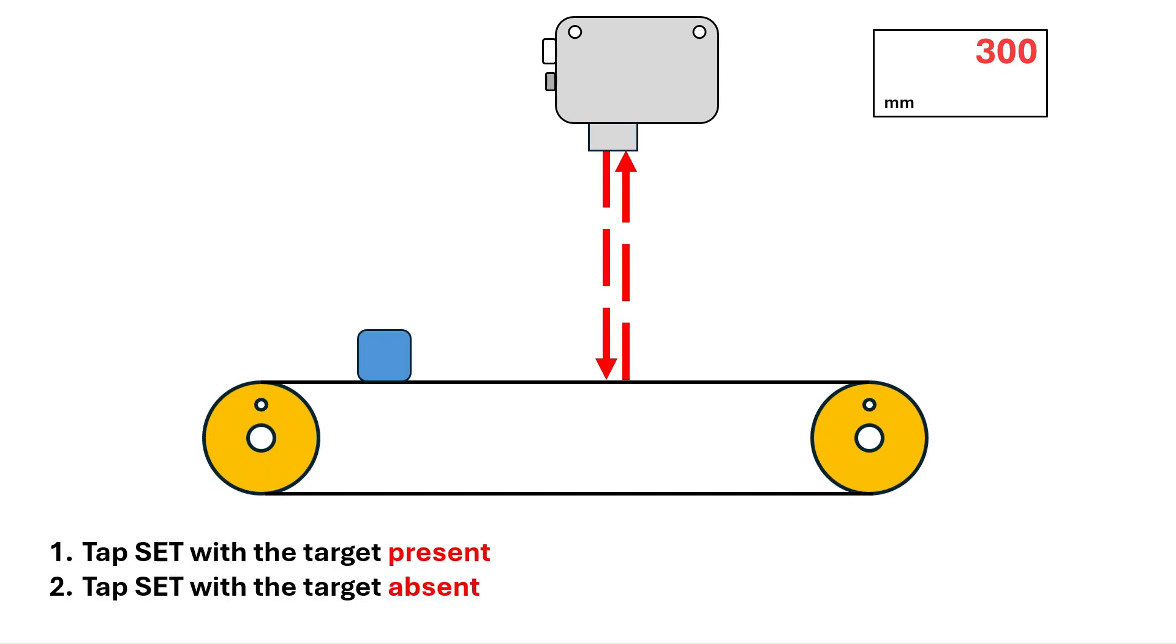Just like the two-point calibration with the through beam, tap the set button with the target in front of the sensor. The sensor will note what the live value is, which is 250 millimeters. Then, tap set again when the part is not in front of the sensor, which is at a distance of 300 millimeters.